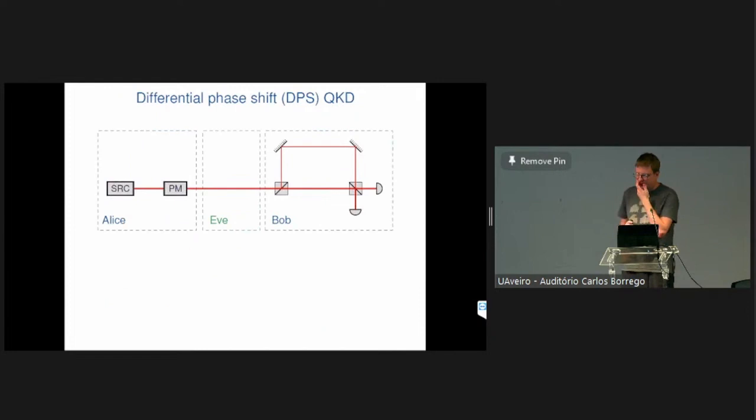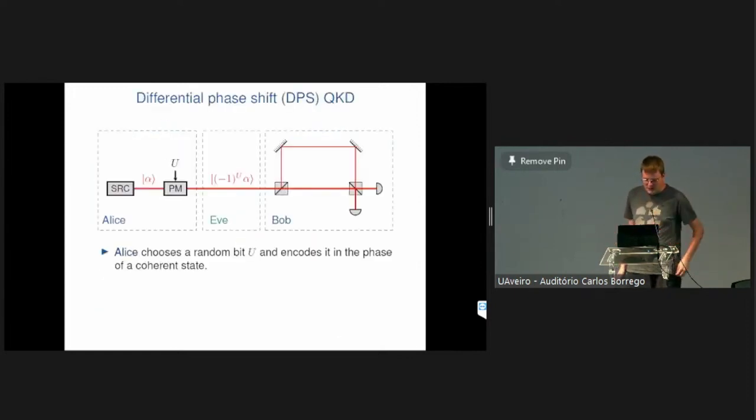And so here is the basic setup of this differential phase shift protocol. So contrary to the previous talk, this here is a device-dependent protocol. So we assume that the boxes here labeled as Alice and Bob, they are trusted. But Eve in the middle, she is allowed to do any operation allowed by the laws of quantum mechanics. And so you see in Alice's lab, she has a laser and a phase modulator. And then what she does is she chooses a random bit U uniformly at random, feeds it into her phase modulator and encodes this bit in the phase of a coherent state.